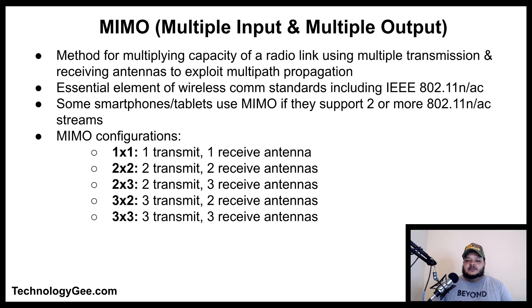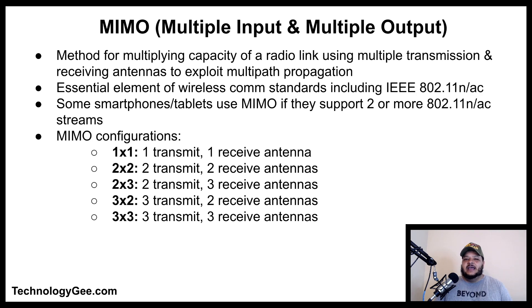MIMO — multiple input and multiple output — is a method for multiplying the capacity of a radio link using multiple transmission and receiving antennas to exploit multi-path propagation. MIMO has become an essential element of wireless communication standards including IEEE 802.11n and 802.11ac. Some smartphones and tablets use the term MIMO if they support two or more 802.11n or 802.11ac streams.